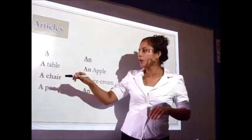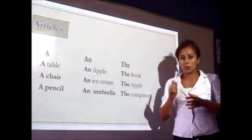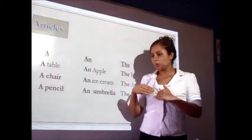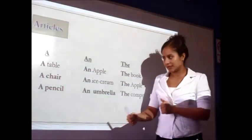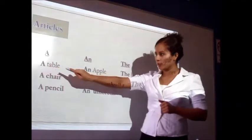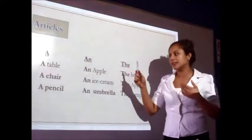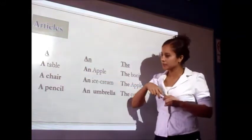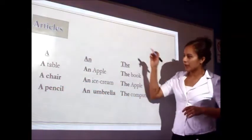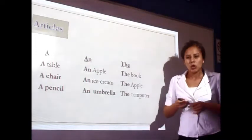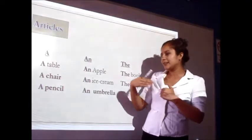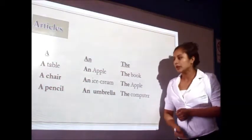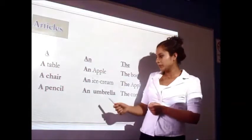We use 'a' when we talk about one thing, and also when the next word begins with a consonant sound. For example: a table, a chair, and a pencil. We use 'an' when the next word begins with a vowel sound. For example: an apple, an ice cream, and an umbrella.